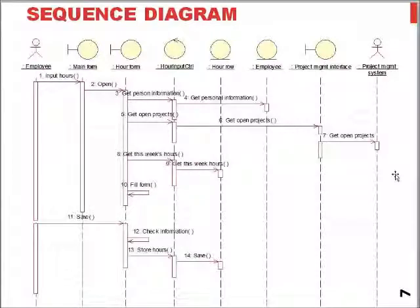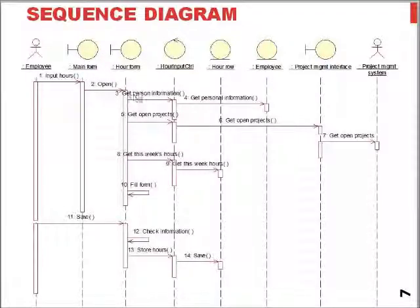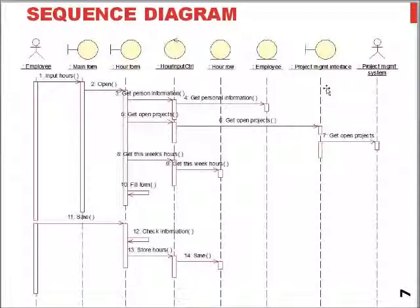Going more into this example, this can also be represented as a sequence diagram, starting from one employee inputting their working hours, opening an hour form, and so on — different classes exchanging information in a use case that simply says that an employee has to be able to save their weekly work hours to the project.